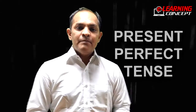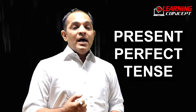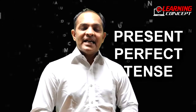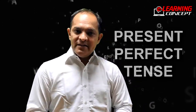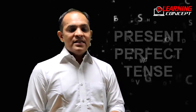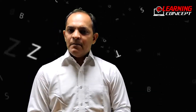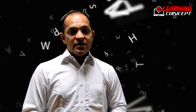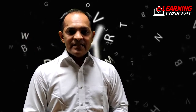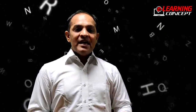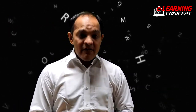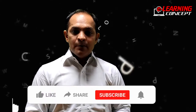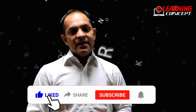Today we are looking at the present perfect tense. As usual, I would like to explain the difference between active and passive voice in the present perfect tense. The formation of a positive sentence in active voice is: subject plus have/has plus past participle plus object plus other words.